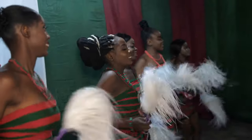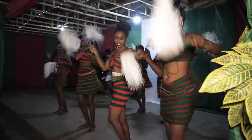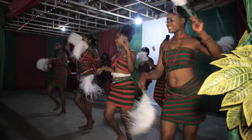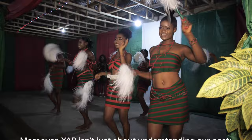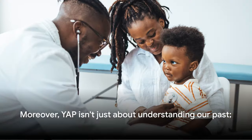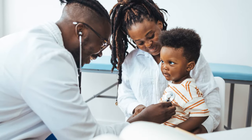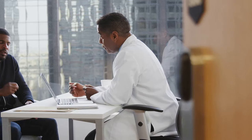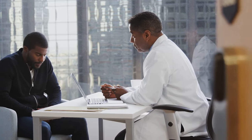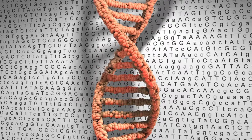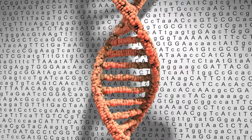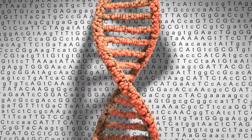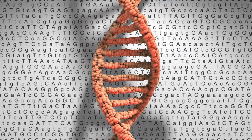By studying YAP, we can piece together the routes our ancestors took, the challenges they faced, and the cultures they created, all of which shaped the world we live in today. Moreover, YAP isn't just about understanding our past — it's also about predicting our future. Certain Y-chromosomal variations are associated with genetic diseases, and specific YAP variations could be linked to a higher risk of developing certain conditions. By identifying these variations in individuals, we can potentially predict their risk and work towards personalized prevention strategies.